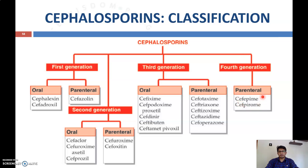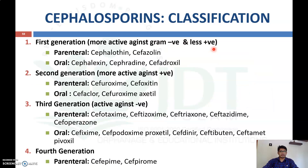The fourth generation is available only in parenteral form and includes cefepime and cefpirome. In terms of activity: the first generation is more active against gram-positive and less against gram-negative bacteria; the second generation has intermediate activity; the third generation is more active against gram-negative bacteria; and the fourth generation has broad-spectrum coverage.